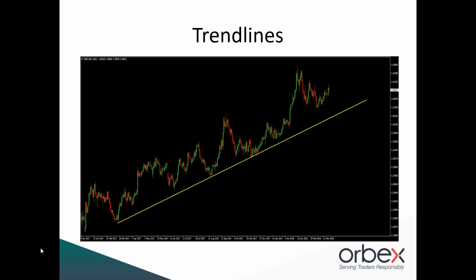This is a really simple but effective way of identifying support in the market and ensuring we're trading in the direction of the trend. Once you've connected two rising lows, you have a trend line in place and can look to trade price as it tests it again. The market pushes higher to new highs, then reverses and retraces lower to test the trend line — which acts as support. We can then use the trend line as support to initiate a buy trade, looking for price to continue within the bullish trend.